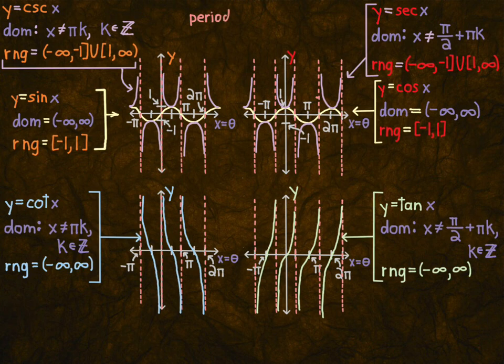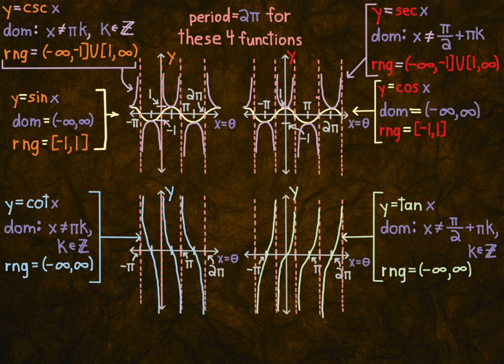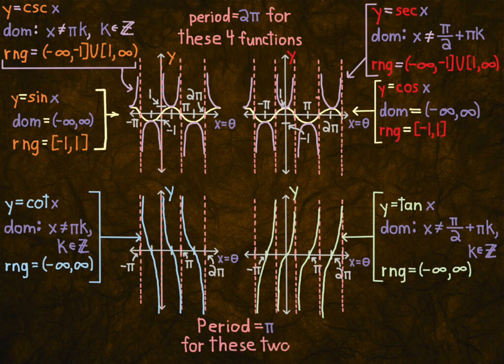Just to point this out: the period for the top four — sine, cosine, cosecant, and secant — are all 2π. The bottom two graphs, cotangent and tangent, are both periodic with period π. So 2π for the first four and π for the bottom two.